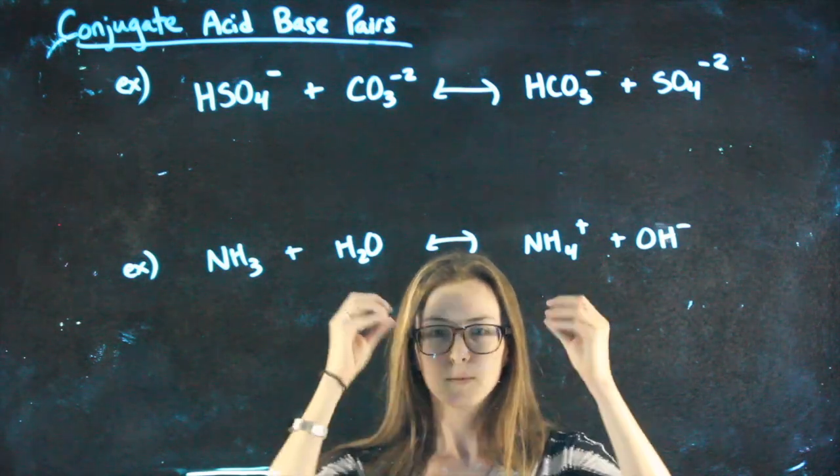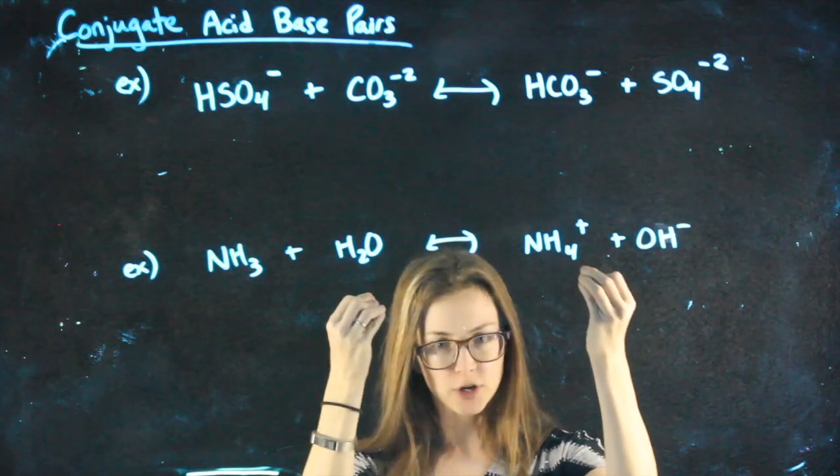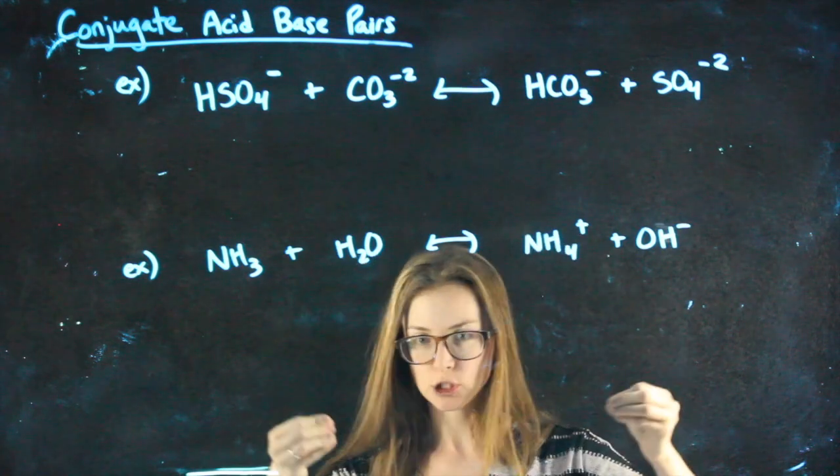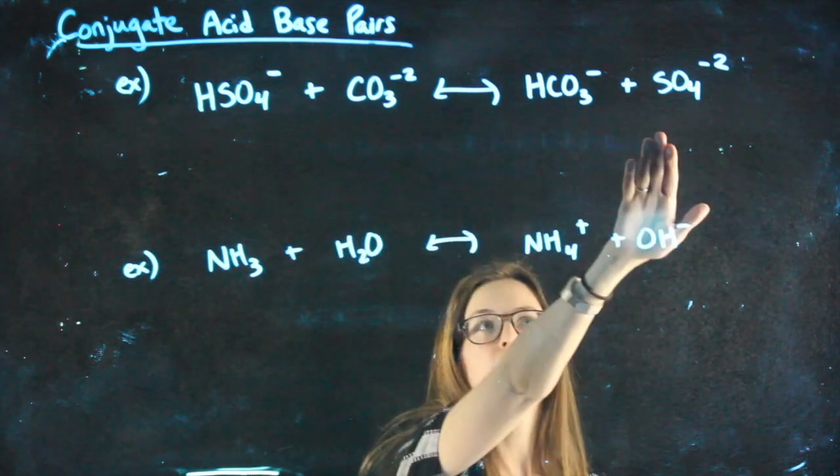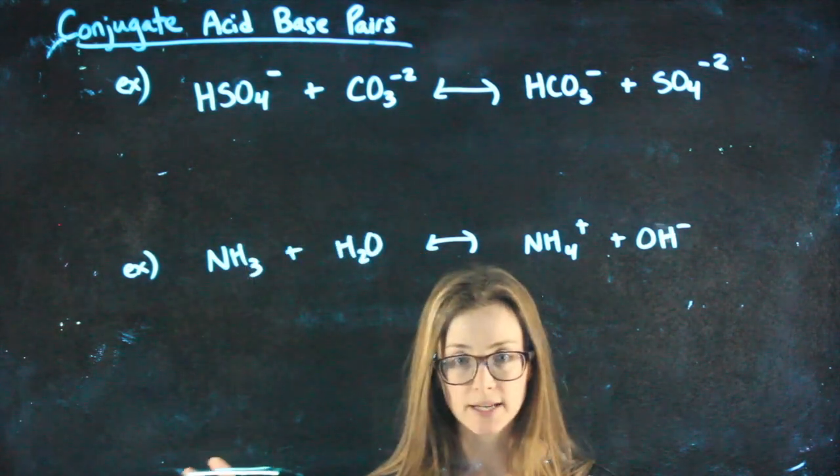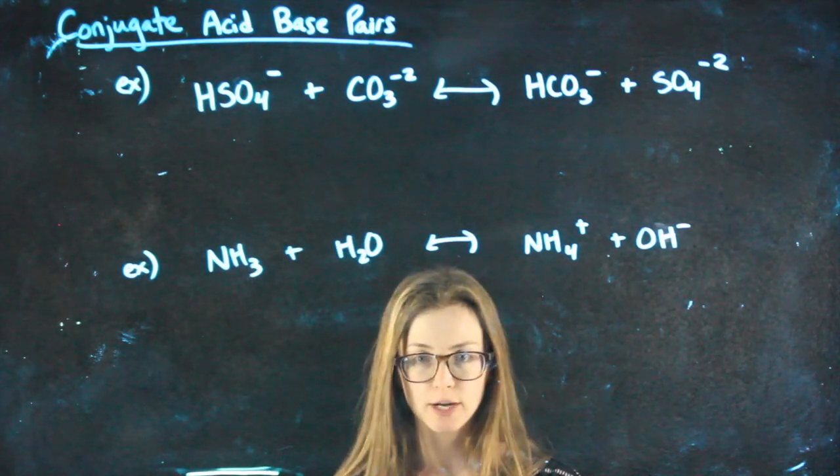Now that we can look at a pair of things and know if they're conjugates—if they're different just by one H—we can also look at reactions between a weak acid and a weak base and identify some conjugate pairs.